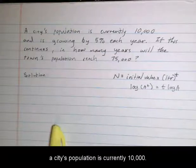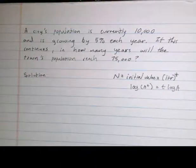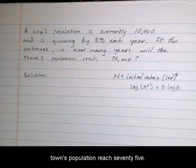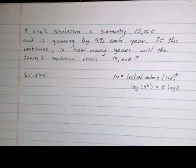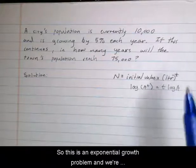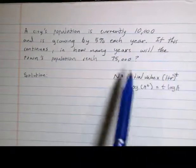A city's population is currently 10,000 and is growing by 5% each year. If this continues, in how many years will the town's population reach 75,000? This is an exponential growth problem where we're given the initial value and the rate of growth.